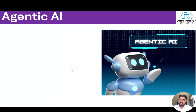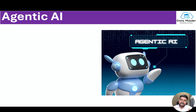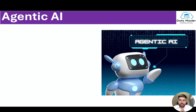Moving further, we have agentic AI. Think of an agent that can autonomously handle complex tasks. While an LLM like ChatGPT can assist with basic tasks — you ask a prompt and it responds — it's not designed to perform complex tasks.